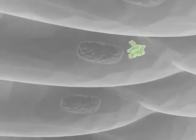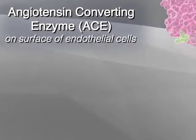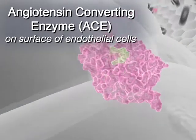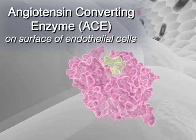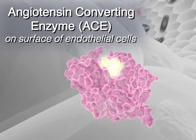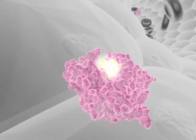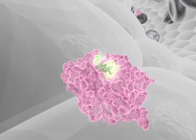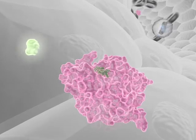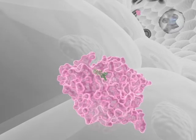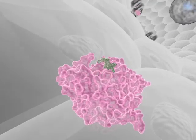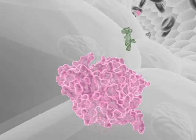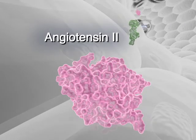Angiotensin 1 interacts with angiotensin-converting enzyme, which exists primarily on the surface of the endothelial cells that line blood vessels. This interaction results in cleavage of specific amino acids from angiotensin 1 and the formation of angiotensin 2.